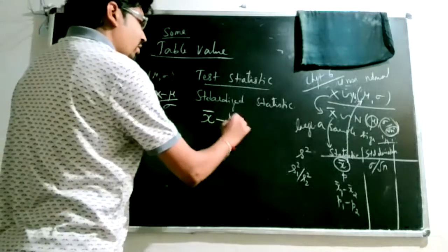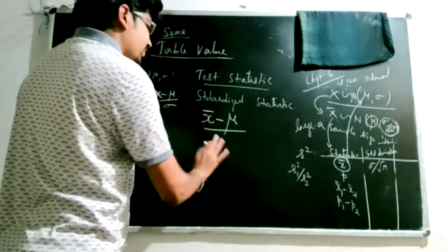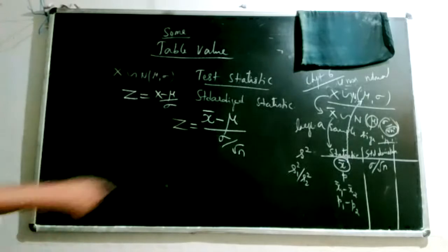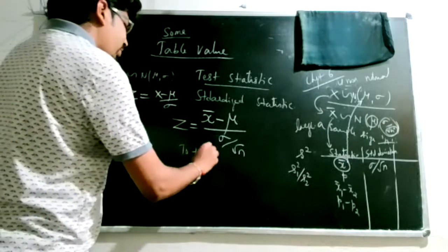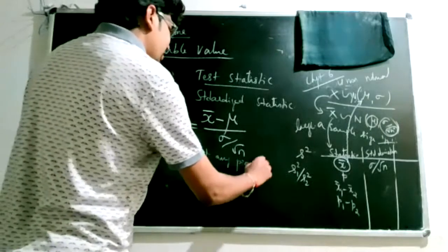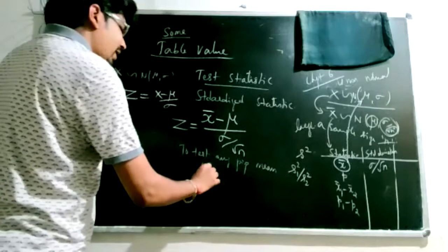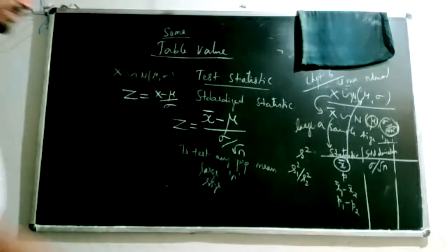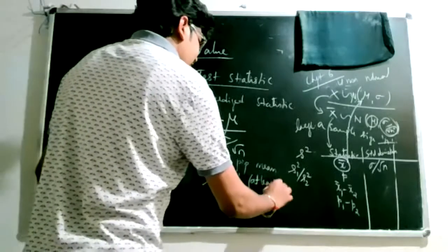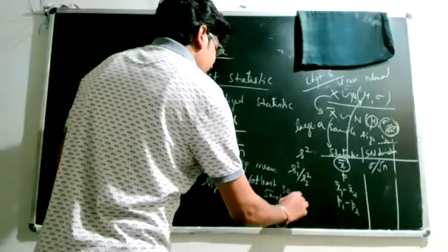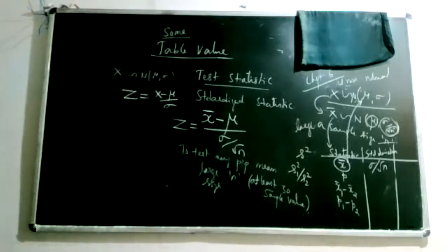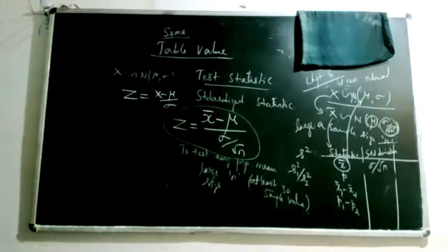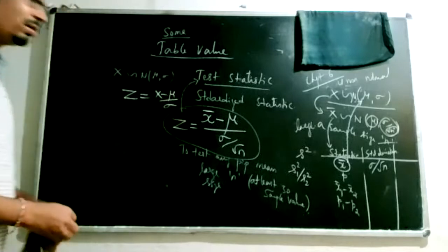We know how to standardize a normal variable: if x has mean mu and standard deviation sigma, then z = (x minus mu) divided by sigma is a standard normal variable. Similarly, the test statistic for x-bar is z = (x-bar minus mu) divided by (sigma by root n). This follows standard normal distribution N(0,1). We can use this test statistic to test any population mean when we have a large sample of at least 30 values.